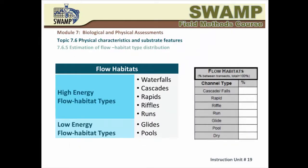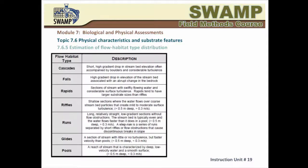Every stream channel is made of pools, riffles, glides, and other types of flow habitats. Per the SWAMP protocol, the interval between transects is the spatial component that serves as a flow habitat type evaluation unit — the cumulative area of each habitat type is estimated and expressed as a percentage of the interval's total wetted channel area. The type of habitat you find in a stream is closely related to the slope at that section because the slope determines how fast the water flows, that is, the flow energy. High-energy habitat types include waterfalls, cascades, rapids, riffles, and runs. Low-energy habitats are characterized by slow-moving water such as glides, or ponded water such as pools.